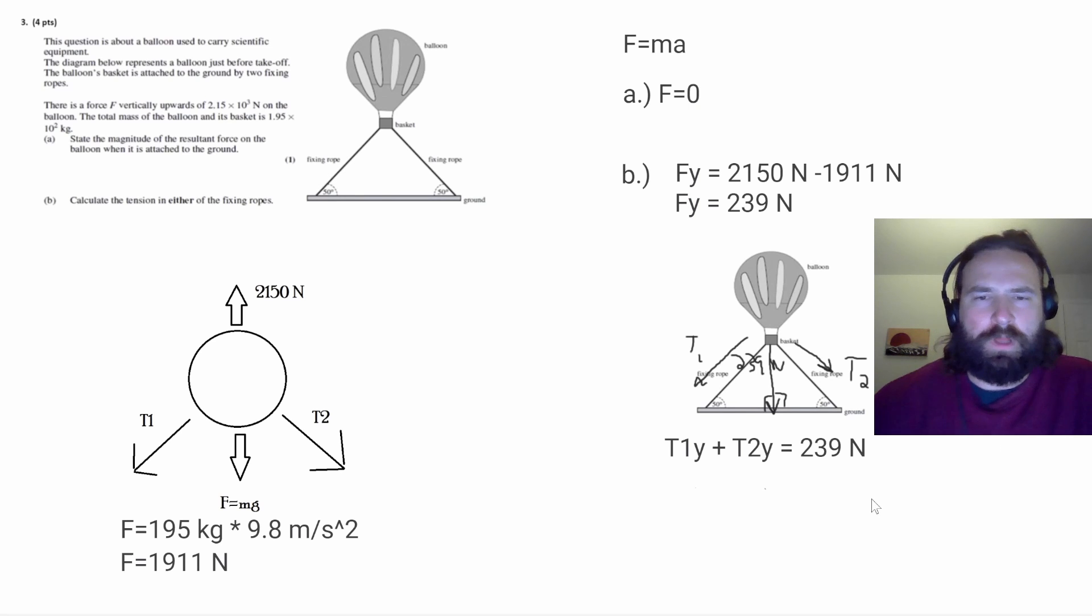So this equation is useful because even though we're really trying to solve for one of these tensions, we're only looking for the tensions in one of these ropes, we actually know that these two tensions are going to be equal. And that's because this is an isosceles triangle that we're dealing with. Since both of the base angles are 50 degrees, we know that these sides are the same.